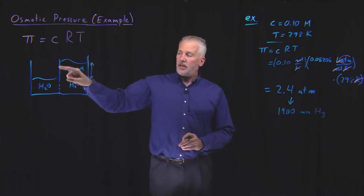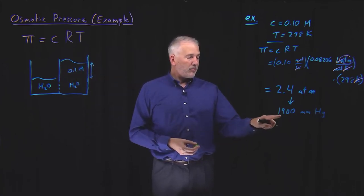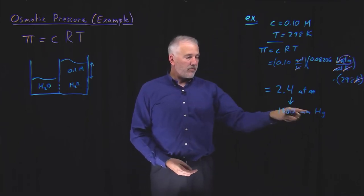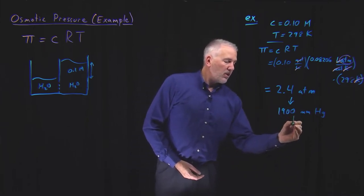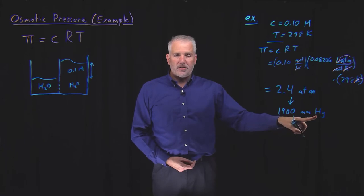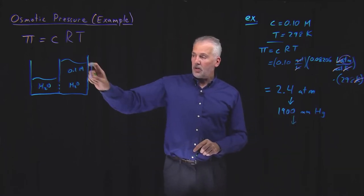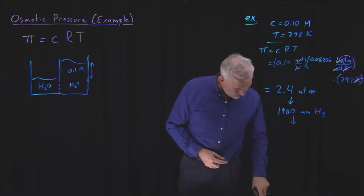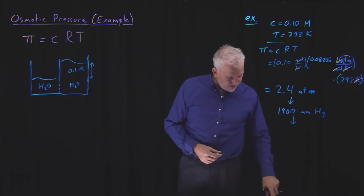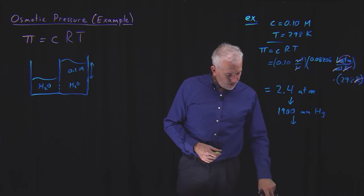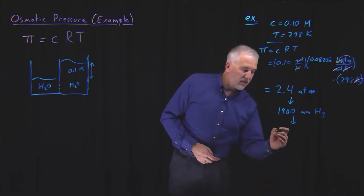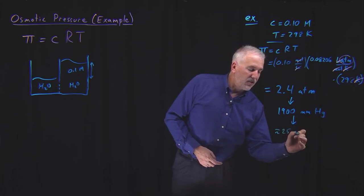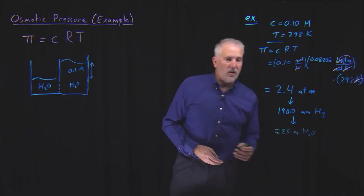So this column will weigh as much as a column of 1.9 meters, almost 2 meters high column of mercury, or since mercury is much denser than water, if I were to have that column of water rather than mercury, mercury is more dense than water, so that corresponds to a column of about 25 meters of water.